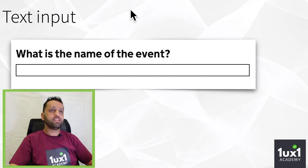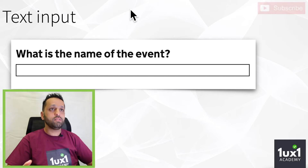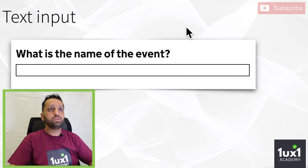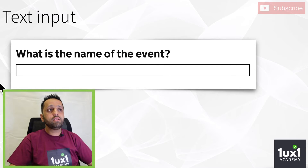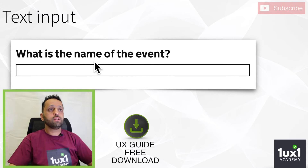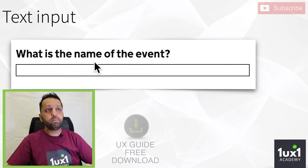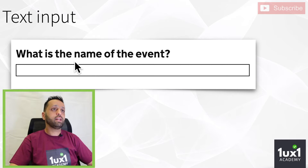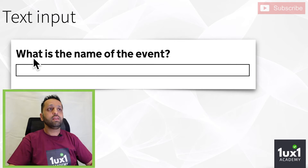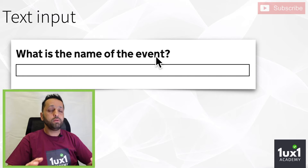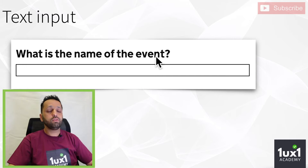The first one is text input. Text input is really crucial to UX design because you need to have the right question, the right terminology — i.e. the content writing, the copywriting needs to be correct, so users can easily understand the messaging. The size of the heading needs to be right, whether you want to use bold or a regular font.